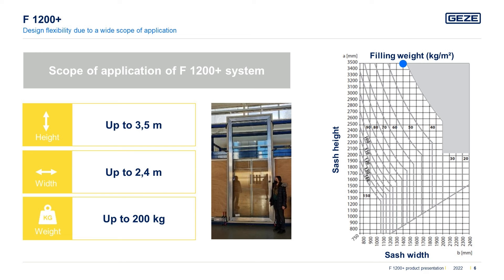Here is a size comparison. You can see a colleague compared to a window in the maximum dimensions of the F1200 Plus system. The displayed window is 3.5 meters high and 1.4 meters wide, corresponding to the maximum dimension of the F1200 Plus system: a max height of 3.5 meters, max width of 2.4 meters, as well as a maximum sash weight of 200 kilograms.